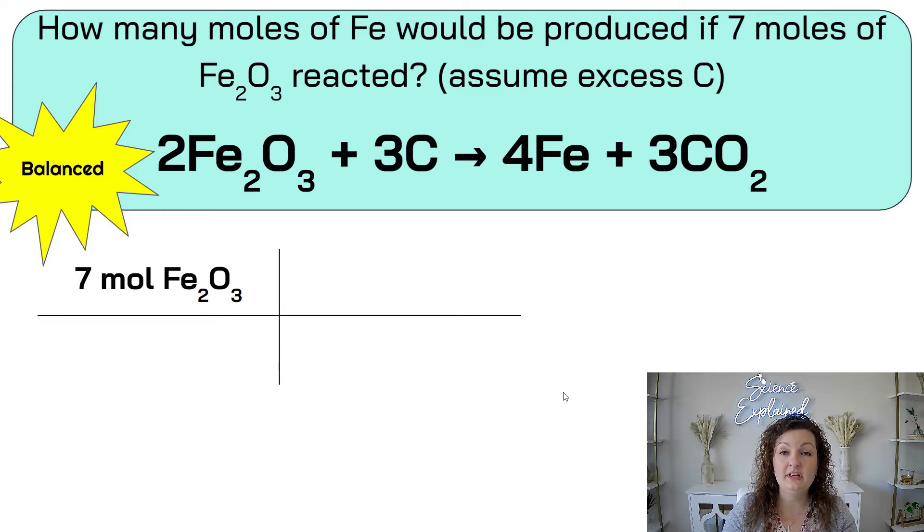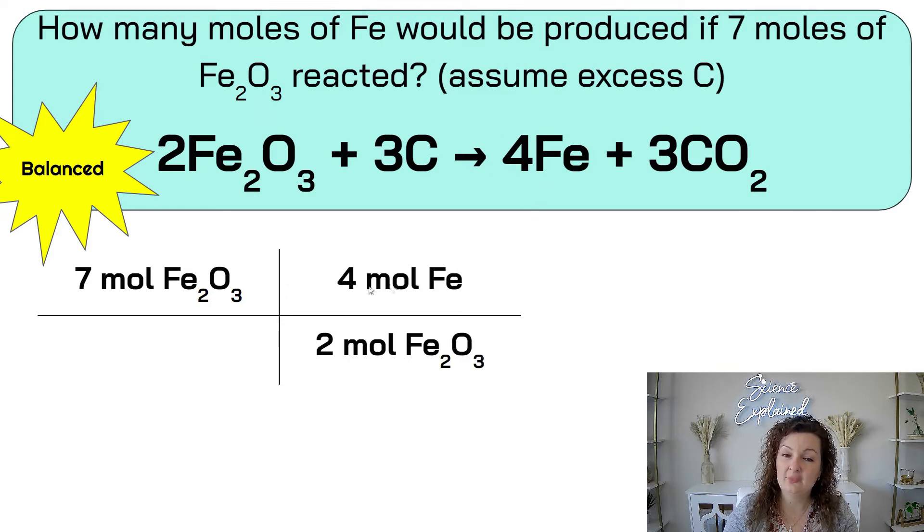You always start with what you're given. But first, is it a balanced reaction? This is the same one we've been working with, so it's balanced. Now we can start with what we're given. 7 moles of Fe2O3. Remember, diagonal down is always the same unit. So this says Fe2O3, which means this one is going to be Fe2O3. And all we have to do is look in our balanced chemical equation for Fe2O3 and see that number up front. The coefficient, that's our moles. So we have 2. So that's going to be a 2 on the bottom.